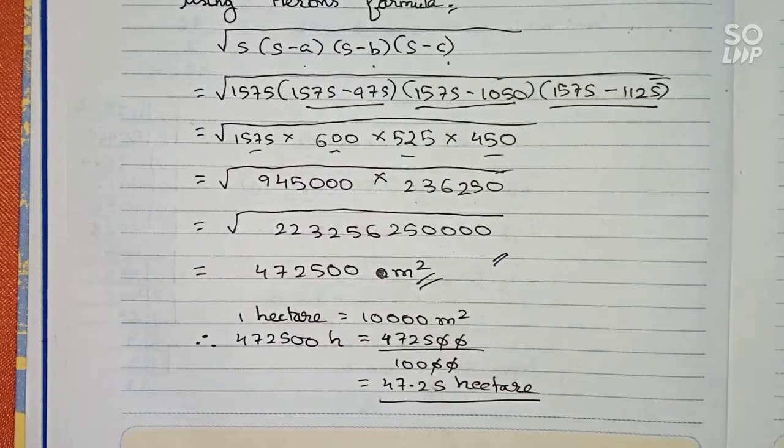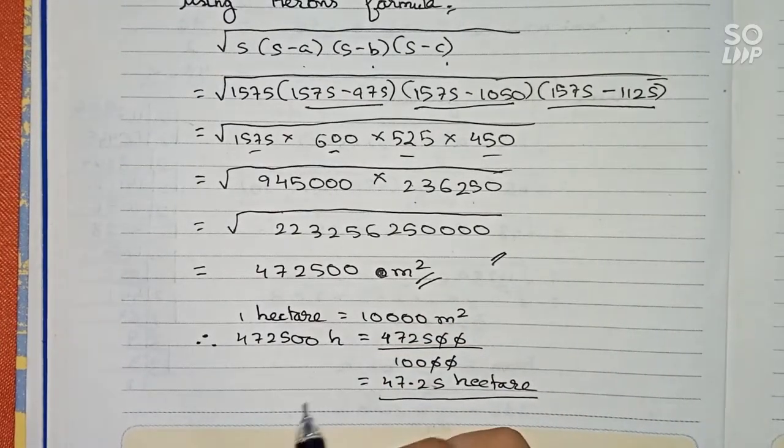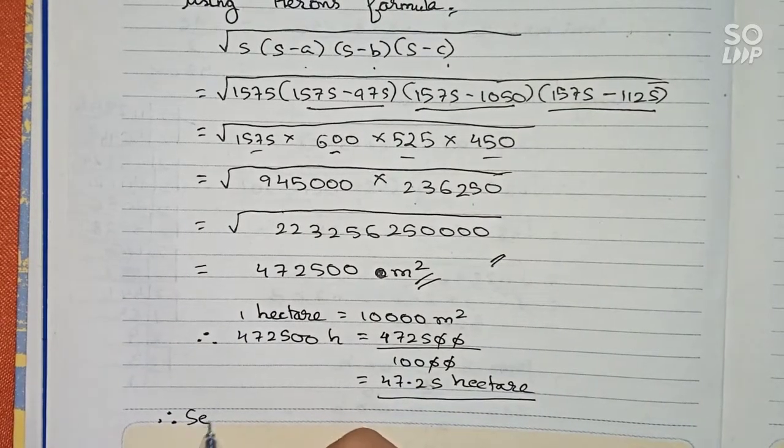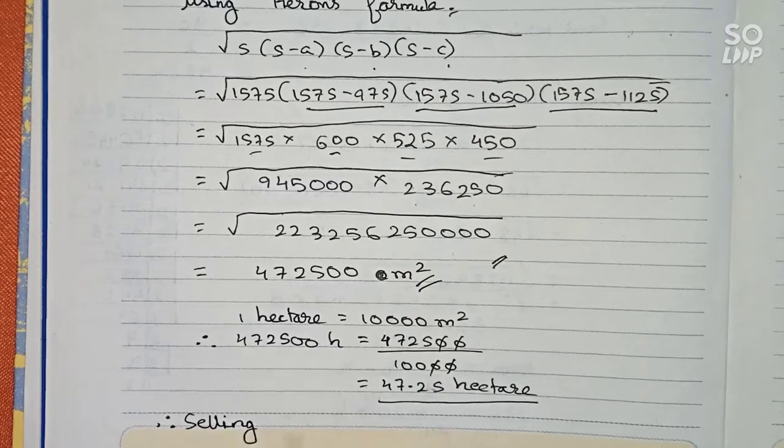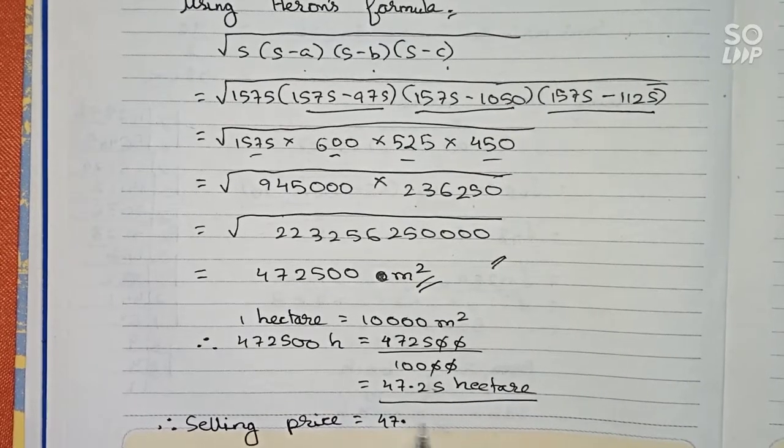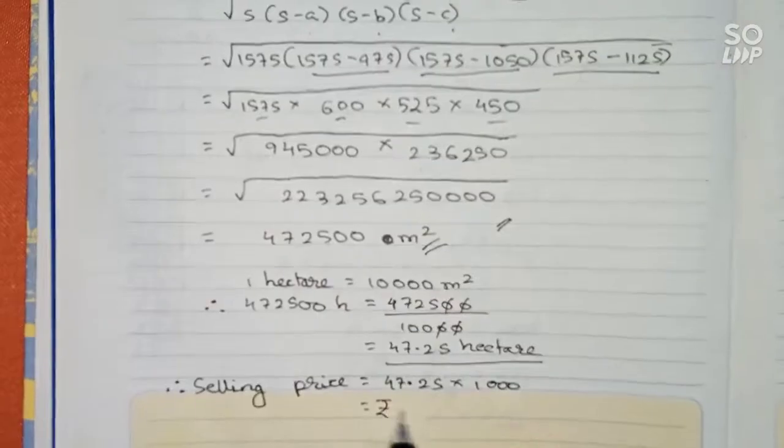And now in the question it is given that it is 1000 rupees per hectare. So therefore selling price is equal to 47.25 multiplied by 1000, so that is equal to rupees 47,250. So therefore this is the complete answer for this question.